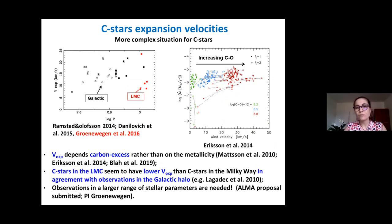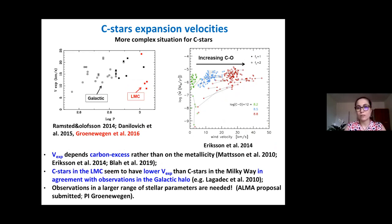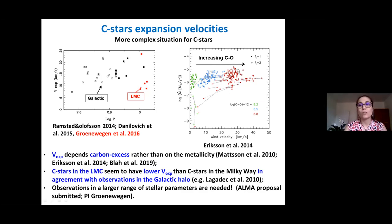We can also look at the expansion velocity of carbon stars. Unfortunately we don't have many measurements at subsolar metallicities, and the ones we have indicate the expansion velocity tends to be lower for lower metallicity. This seems to create a tension with theoretical understanding, because at lower metallicity we expect the dredge-up to be more efficient, producing larger carbon excess, so theoretically we should see an increase in expansion velocity.